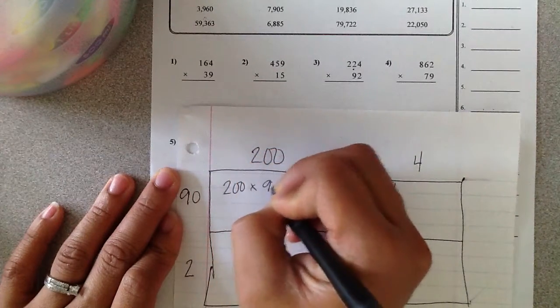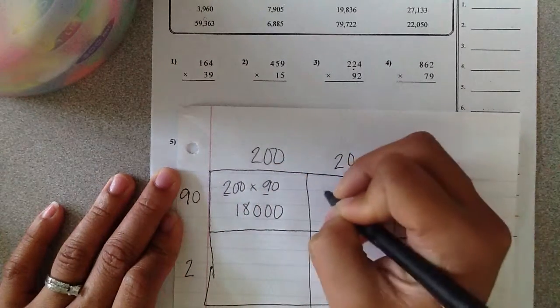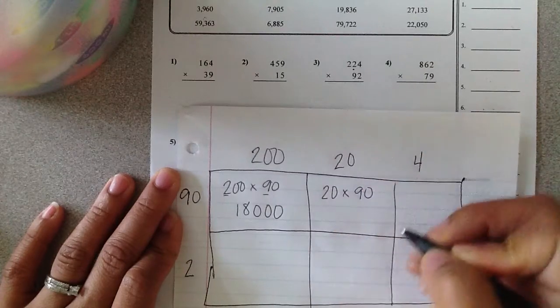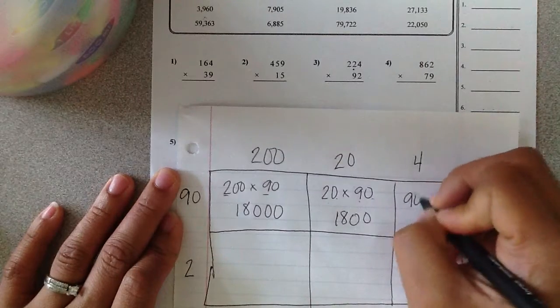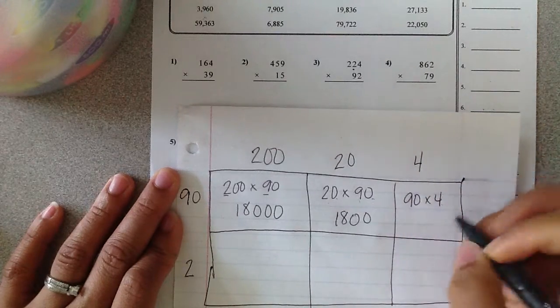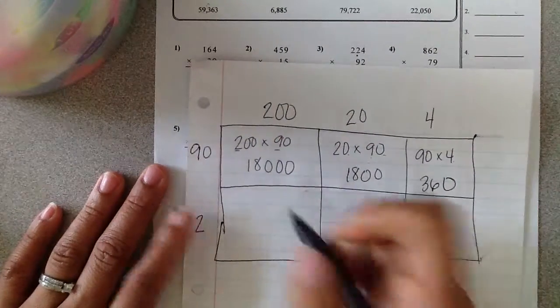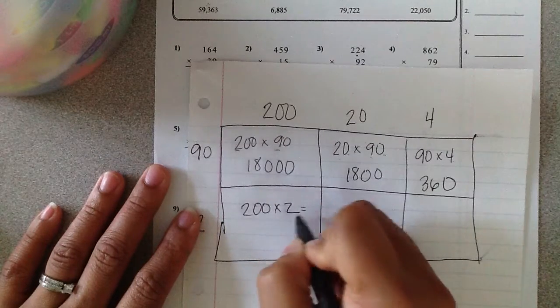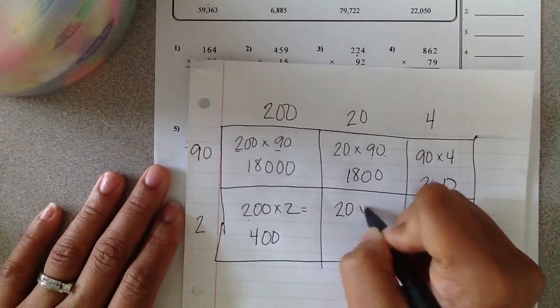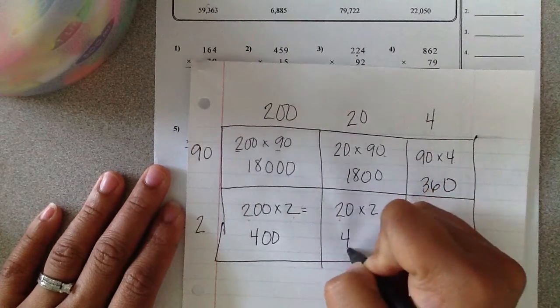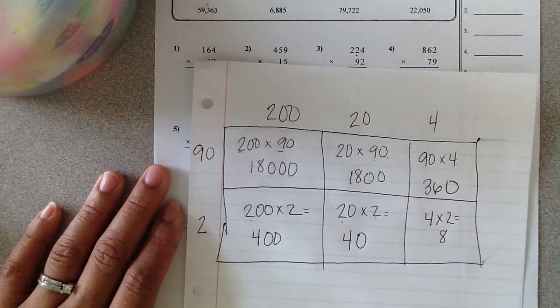Two hundred times ninety. Nine times two is eighteen with three zeros. Twenty times ninety. Nine times two is eighteen and only two zeros this time. Ninety times four. Four times nine is thirty-six with one zero there. Two hundred times two. Two times two is four and I have two zeros to add in. Twenty times two is forty. And then four times two is eight.